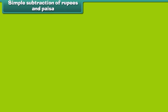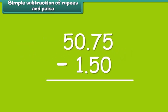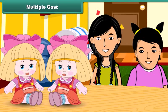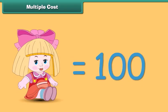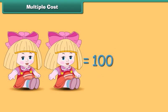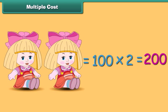Subtraction of rupees and paisa is simple. Now let us understand unit cost and multiple cost using an example of two dolls — one for me and one for my younger sister. The unit cost of a doll is 100 rupees. Unit cost is the cost of a single unit. So the cost of one doll is 100 rupees. The multiple cost is equal to 100 multiplied by 2, which is 200 rupees. A multiple cost is the cost of more than one item, calculated as unit cost multiplied by number of items.